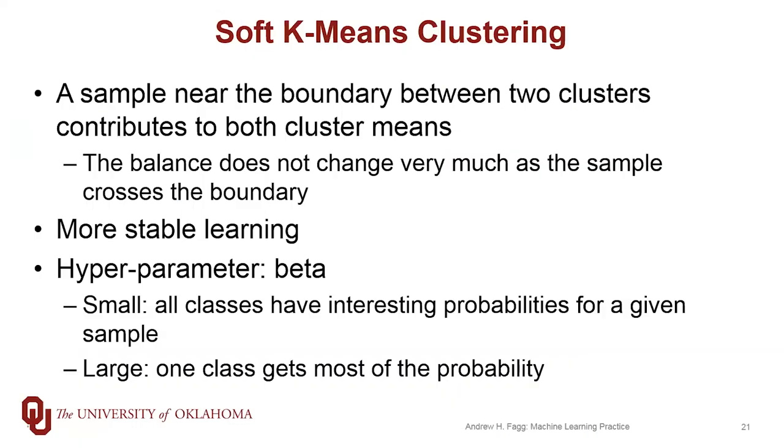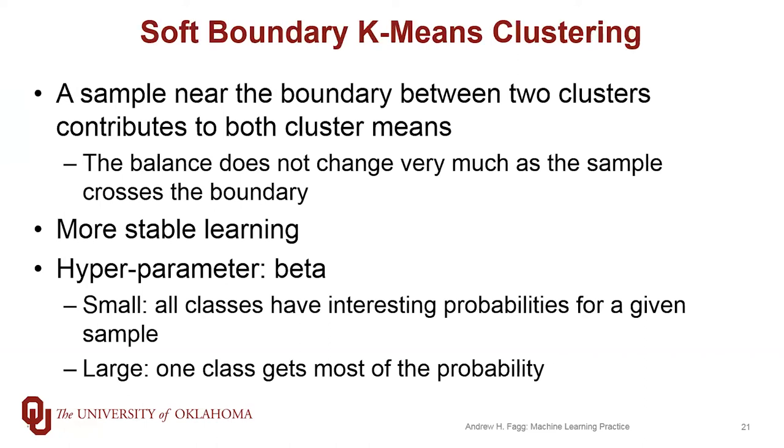To sum up the key ideas here with the soft boundary k-means clustering approach: samples that are near boundaries not only have a probabilistic labeling, but they contribute to the cluster means.